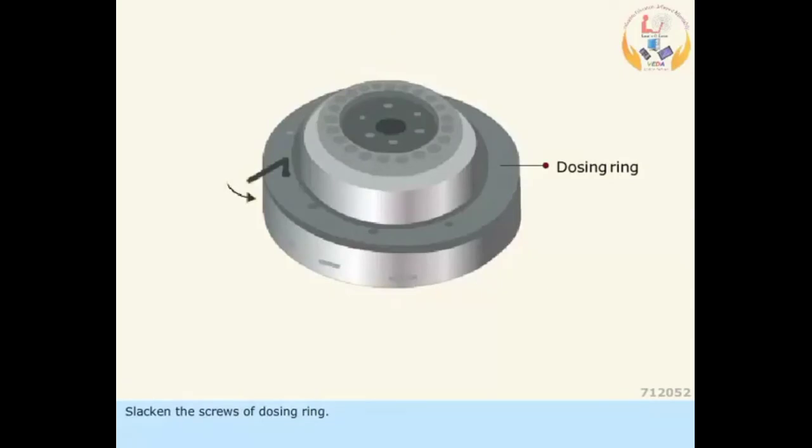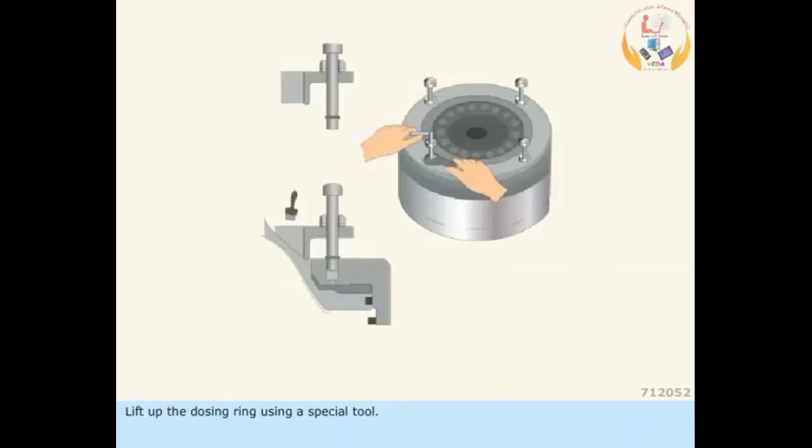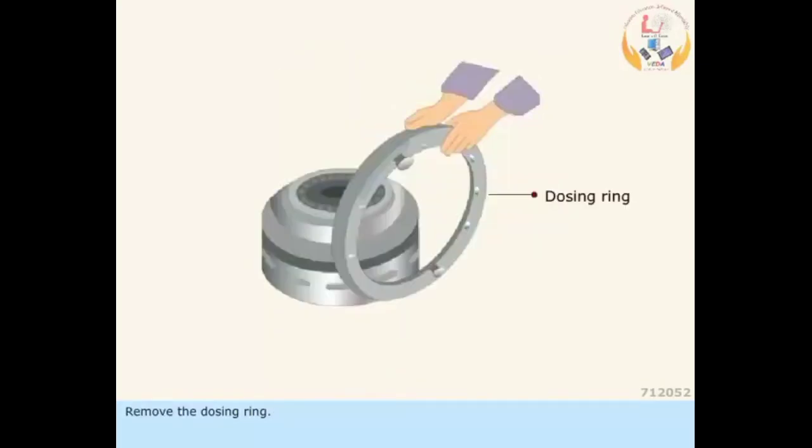Dosing ring: slacken the screws of the dosing ring. Lift up the dosing ring using a special tool and remove the dosing ring. Note: the dosing ring keeps the operating slide intact with the bowl body. The dosing ring can also be called the distributing ring.